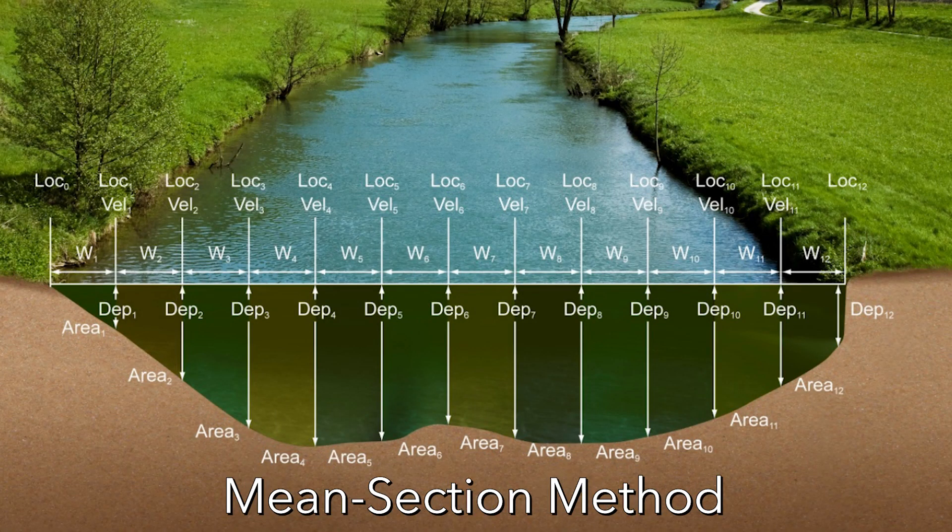And in each vertical, we'll be taking velocity measurements. We'll sum all of those verticals, and at the end of the measurement, we'll have one number. The exact equations used in the calculation will depend on what method your agency uses. For more information, consult the FlowTracker 2 manual.